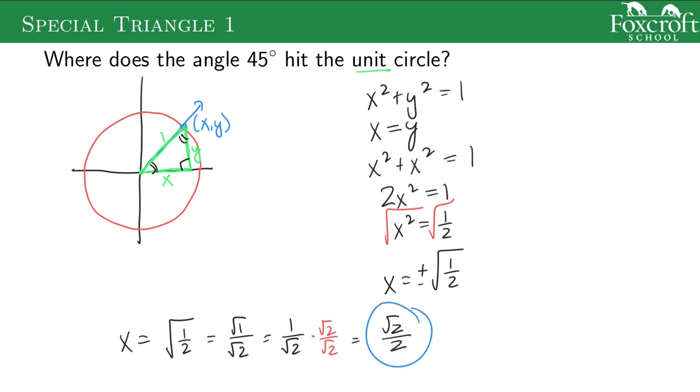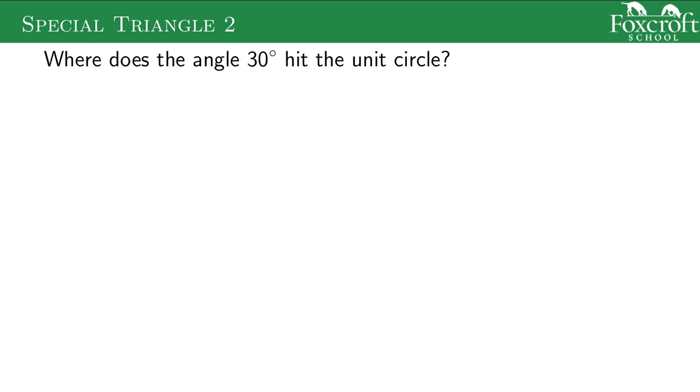So the x and y value, where 45 degrees hits the unit circle, is the square root of two over two. And you don't need to know this whole process again. This is really the only part that's really important. Now let's do the same thing with a 30 degree angle.